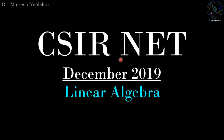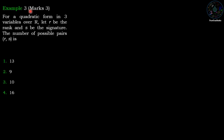Welcome friends. In this video we are going to discuss the problem of CSIR NET December 2019, a problem of linear algebra. Example 3: for a quadratic form in 3 variables over R, let R be the rank and S the signature. The number of possible pairs (R, S) is — we have 4 options: first option 13, second option 9, third option 10, and fourth option 16.